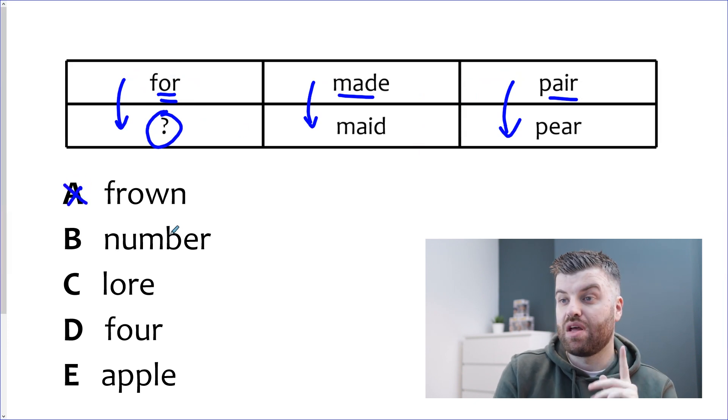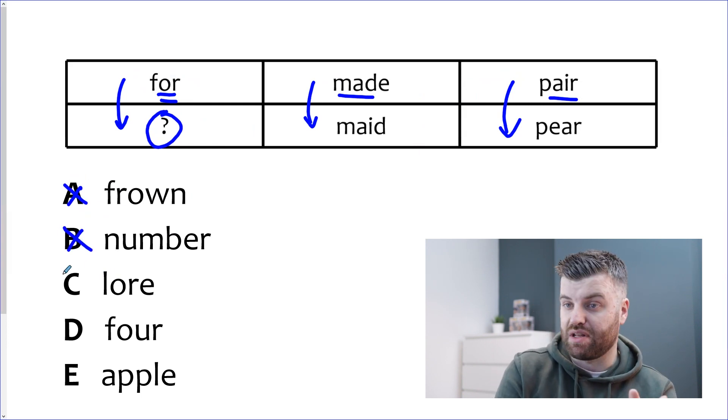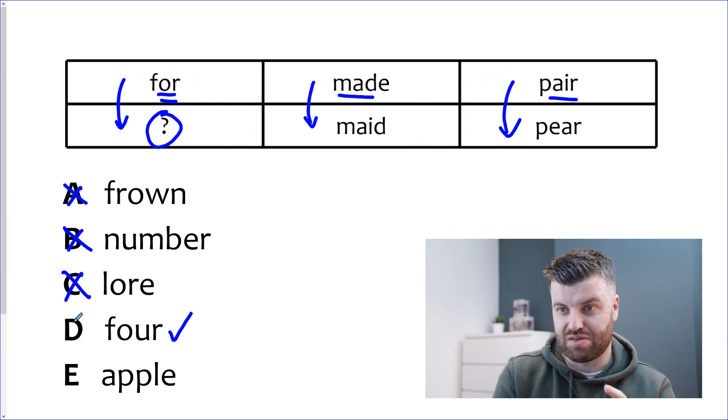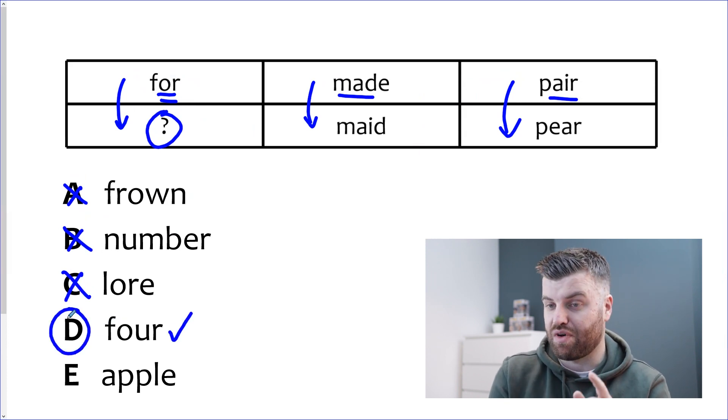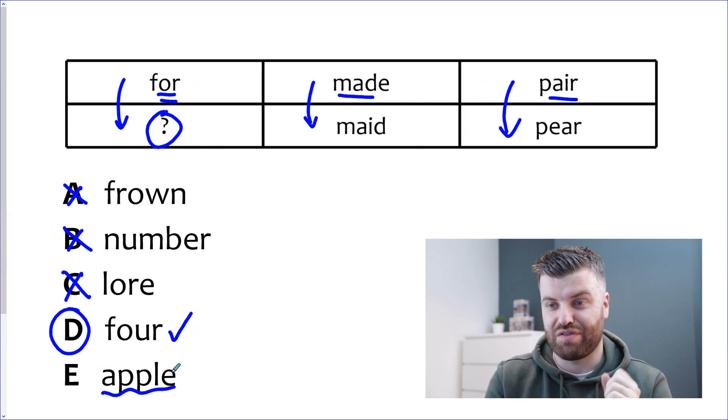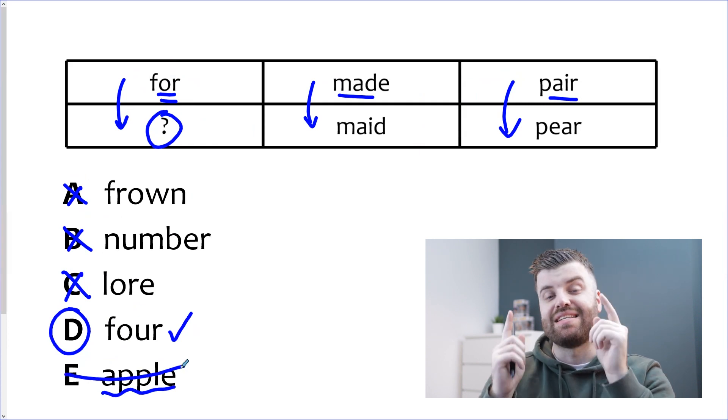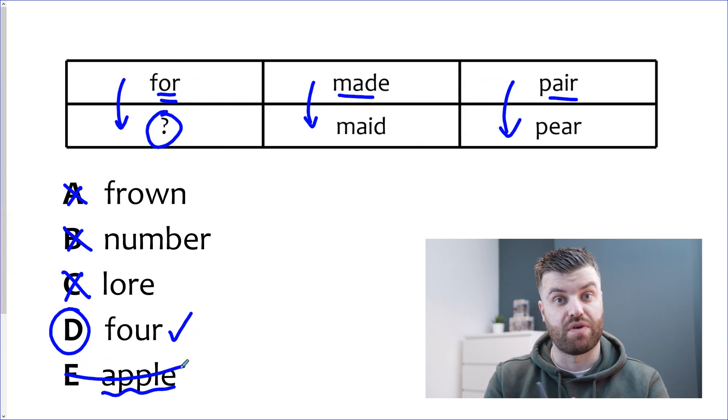Frown, no. Number, no. Lore, well it does rhyme but we're looking for homophones exactly so it can't be lore. Four, the number, yes. I'm going to circle it. If it was a test I'd probably move on. But let's just make sure that E isn't an answer. Apple obviously doesn't sound anything like for. So the answer here is D and the reason is that the link is in columns. We have homophones.